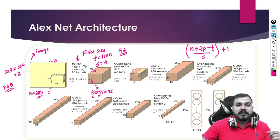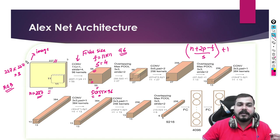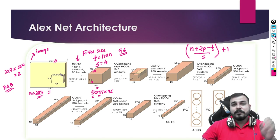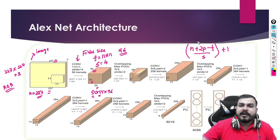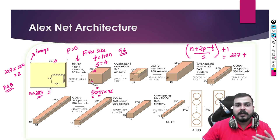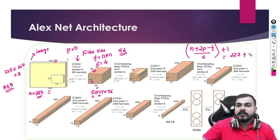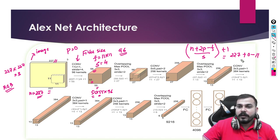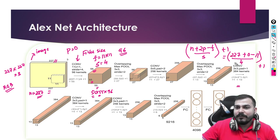Padding means that if you want to keep the image the same size in the next layer, you add zeros around the border. If you haven't seen the padding video, check my complete deep learning playlist. Here P is 0 because I did not do any padding. So the formula becomes: (227 + 2×0 − 11) / 4 + 1. That is (227 − 11) / 4 + 1 = 216 / 4 + 1.